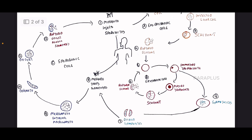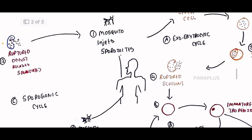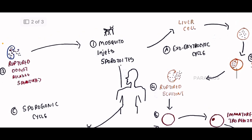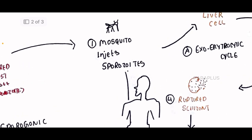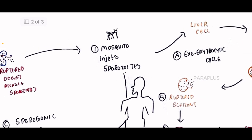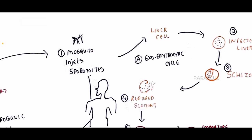If you have any confusion about this diagram, it is a simple diagram. I will show you a more detailed one. The first step is the mosquito injects sporozoites — sporozoites are the same as the Plasmodium species parasite. This initiates the exo-erythrocytic cycle, which is the first process.